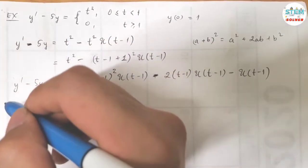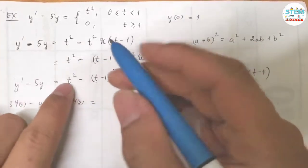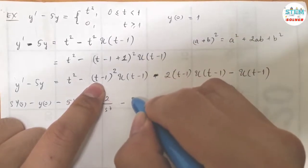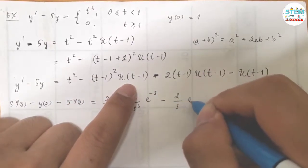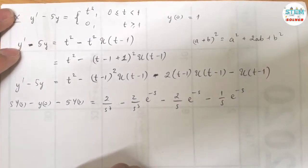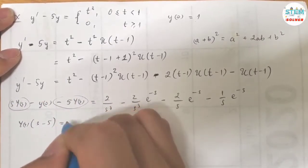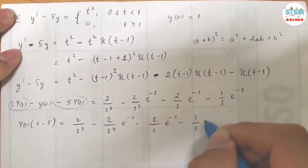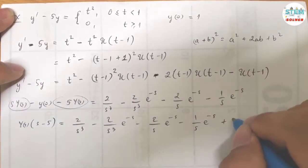Let me rewrite this first. On the left side I have the Laplace Transform expression. On the right side I have 2 over s cubed, minus 2 over s cubed times e to the negative s, minus 2 over s squared times e to the negative s, minus 1 over s times e to the negative s. Now on the left side, I group the terms together and factor capital Y(s) out. Y of 0 equals 1, so negative 1 moves to the right as positive 1.